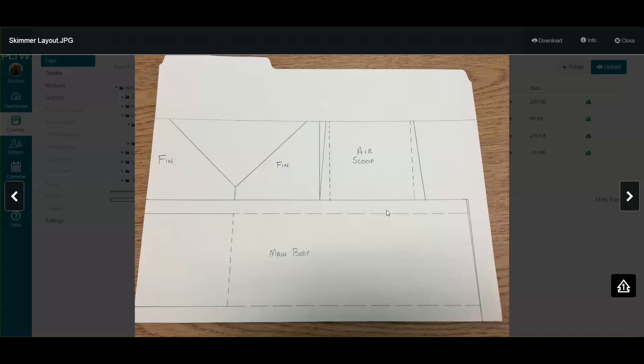I would lay it out like you see here. Remember, dotted lines are lines you're folding, solid lines are lines you're cutting. So if you see a solid line, you're going to cut it. If you see a dotted line, you're going to fold it.